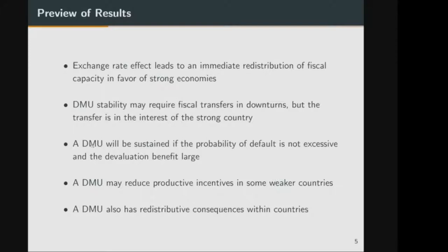Based on these effects, we have three main results. First, the exchange rate effect leads to an immediate redistribution of fiscal capacity — the local currency value of domestic production — in favor of strong economies. Second, the DMU could be a stable equilibrium, but may require fiscal transfers in downturns because the weaker economy cannot devalue anymore; importantly, these transfers are in the interest of the strong country to sustain its fiscal capacity benefit. Third, even when a DMU is agreed upon, it does not necessarily improve productive incentives and may even reduce them in weaker countries, because politicians may be only partially driven by productive incentives. But there will be redistributive consequences both across and within countries.